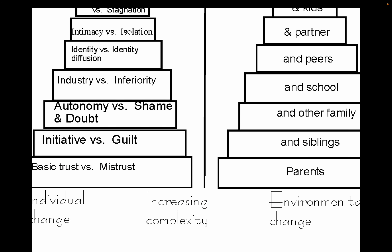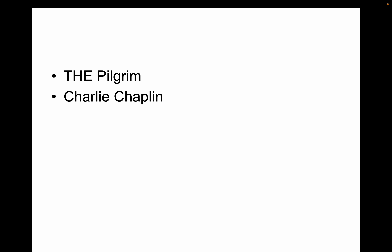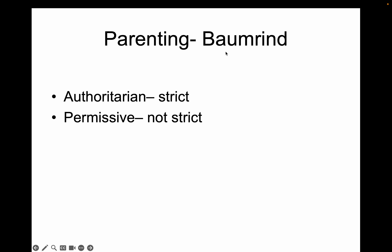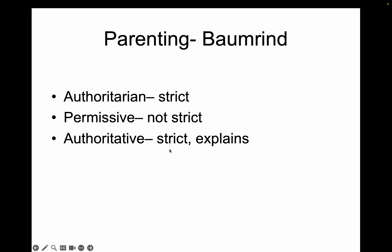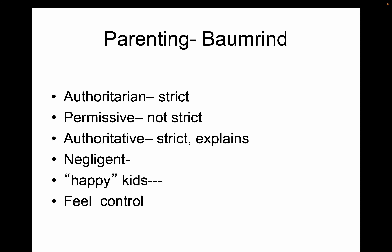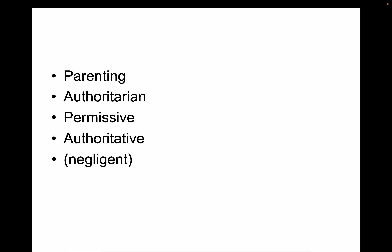Baumrind is the parenting guru. Authoritarian parenting is very strict and doesn't explain why. Authoritative is strict but explains why. Permissive is chill. Research indicates authoritative kids are the happiest — they feel some control, they have limits, but they understand why.